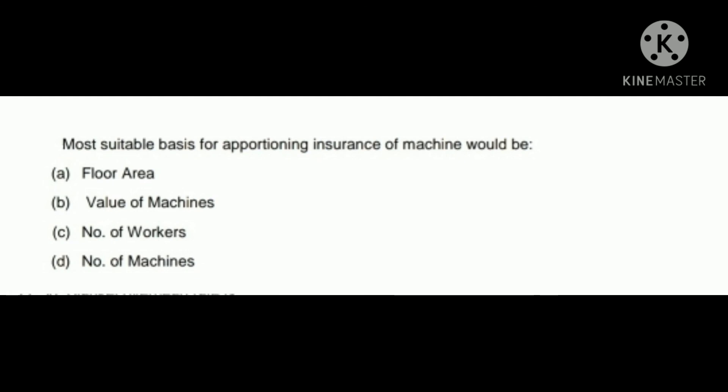The last question of today's series: the most suitable basis for apportioning insurance of machines would be — A) floor area, B) value of machines, C) number of workers, D) number of machines. Option B — value of machines — is the correct answer.